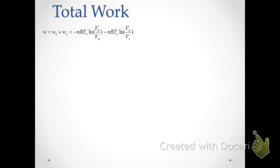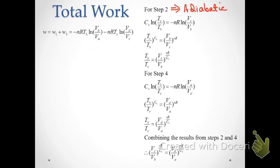Here is the equation for total work — step one plus step three — looking at the volumes associated with the initial and final points of those two steps in the cyclic process. We can simplify this if we can find a relationship between V_B/V_A and V_D/V_C. The key is to look at the adiabatic steps two and four, going back to the equations for a reversible adiabatic process involving an ideal gas.